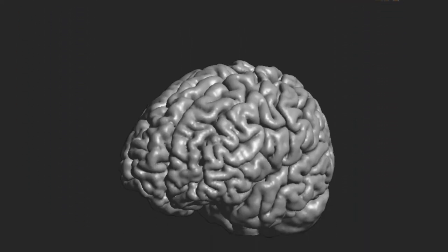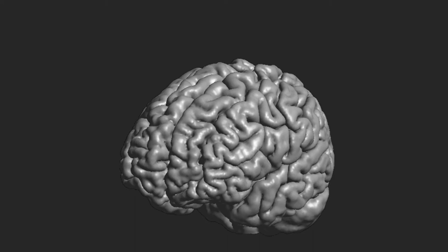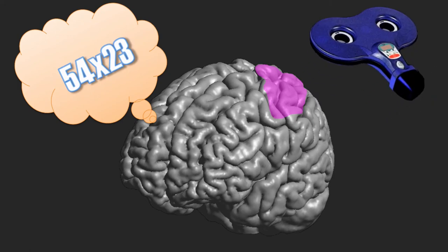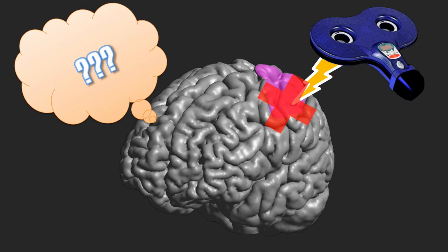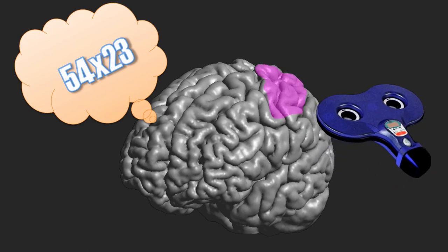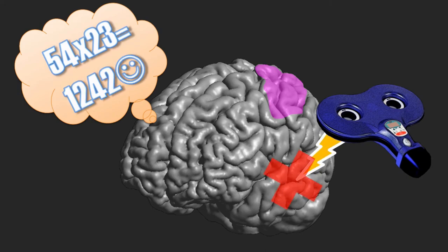Another way to use TMS is to interfere with ongoing activity. If you are doing a task, for example, you have to calculate 54 times 23, brain regions that are important for arithmetic ability would be quite active. Sending a TMS pulse to a brain region would interfere with the activity of that area. If, with your TMS, you target a brain area that is indeed important for arithmetic ability, the calculation time may be longer or you will make more mistakes. However, if the area you targeted is not important for arithmetic ability, then the calculation time stays the same. In this way, we can figure out if a region is or is not involved in the specific action.